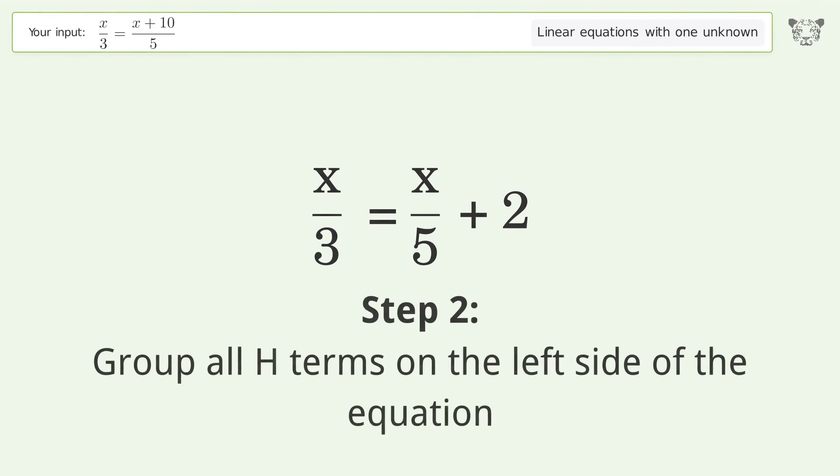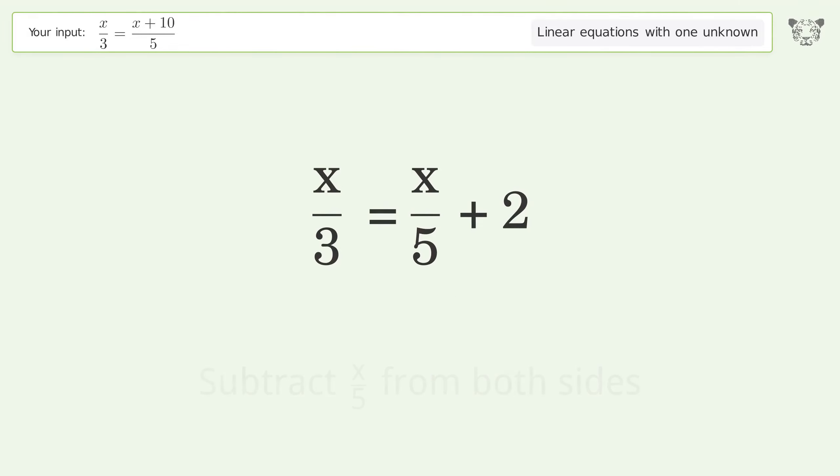Group all h terms on the left side of the equation. Subtract 10 over 5 from both sides.